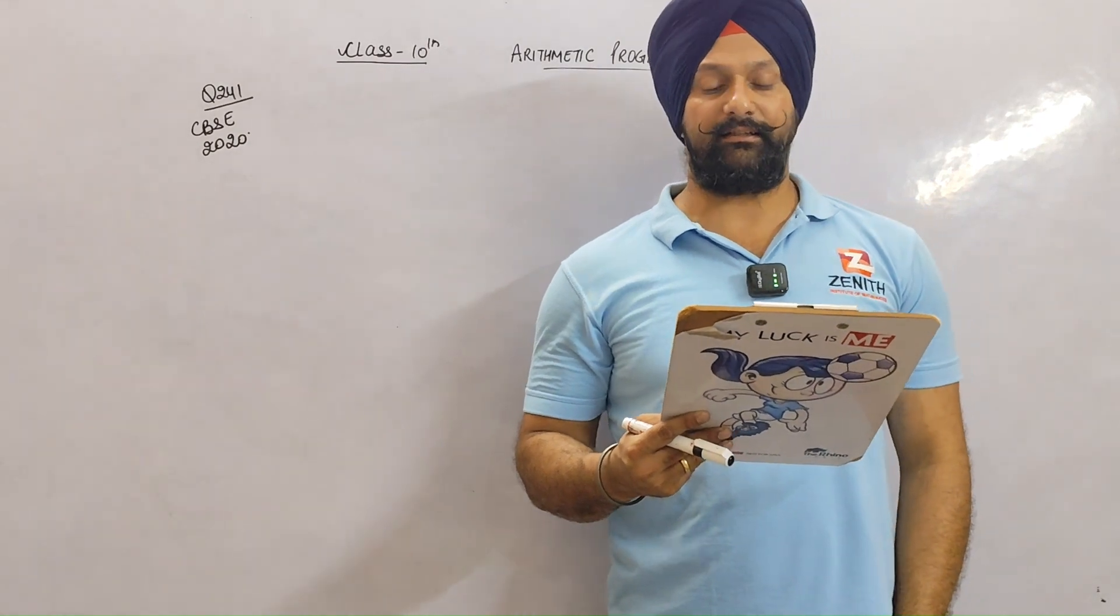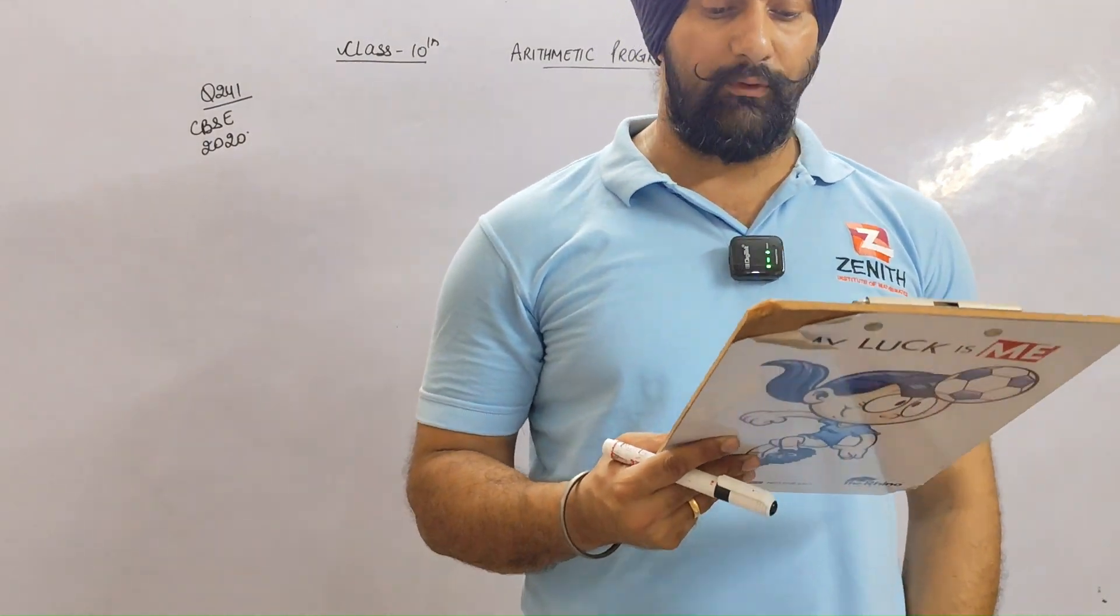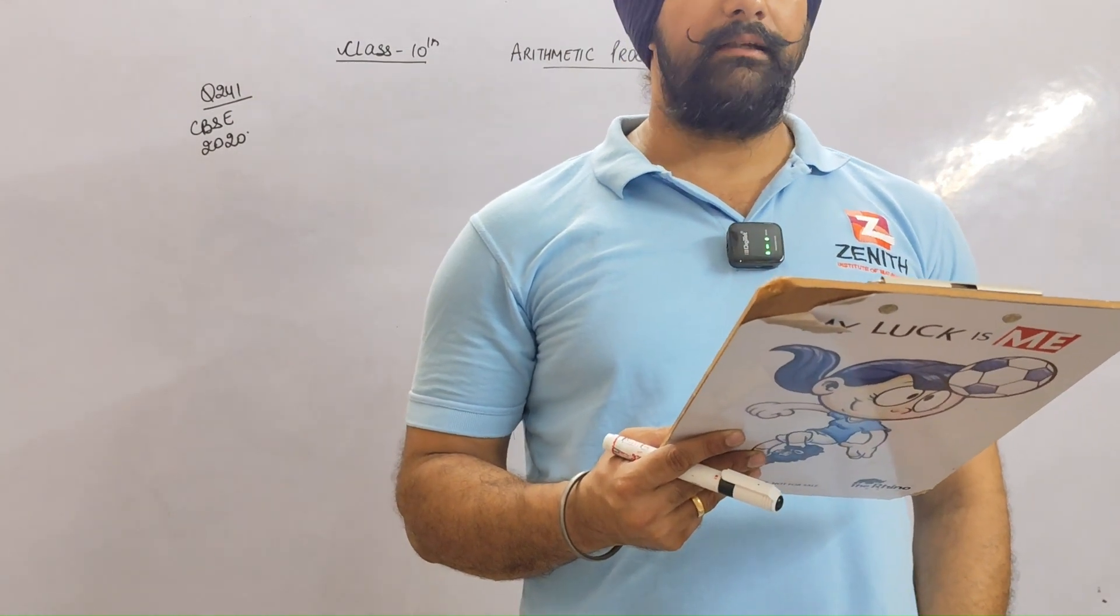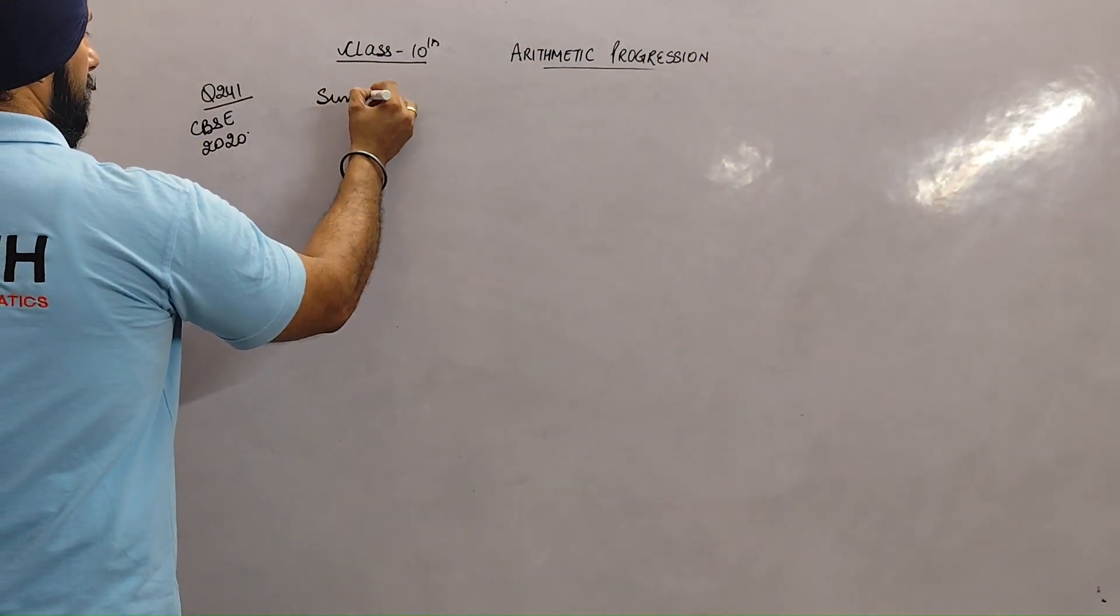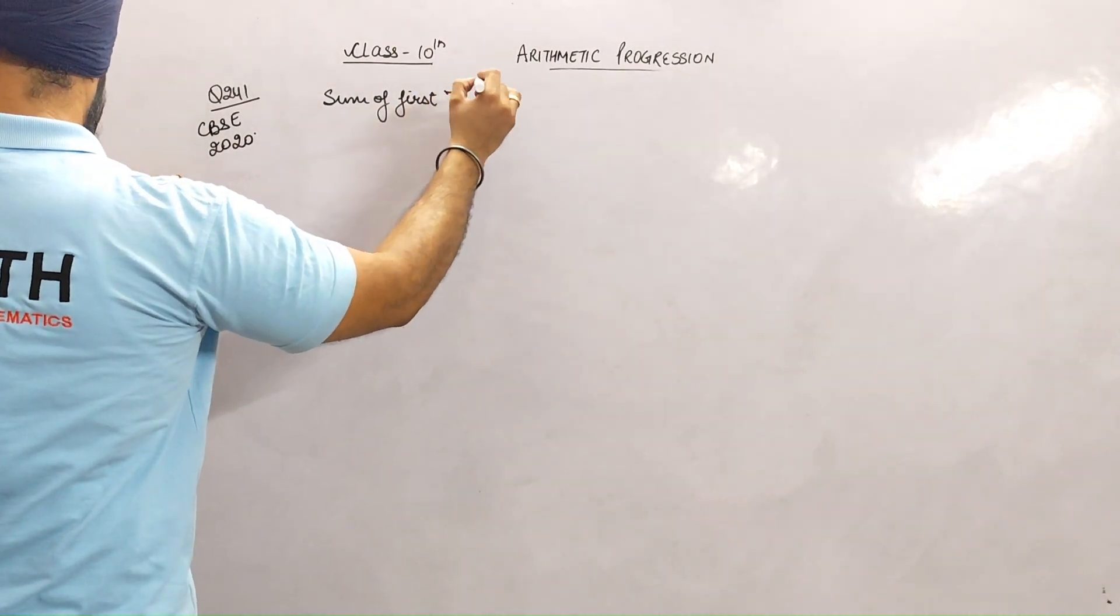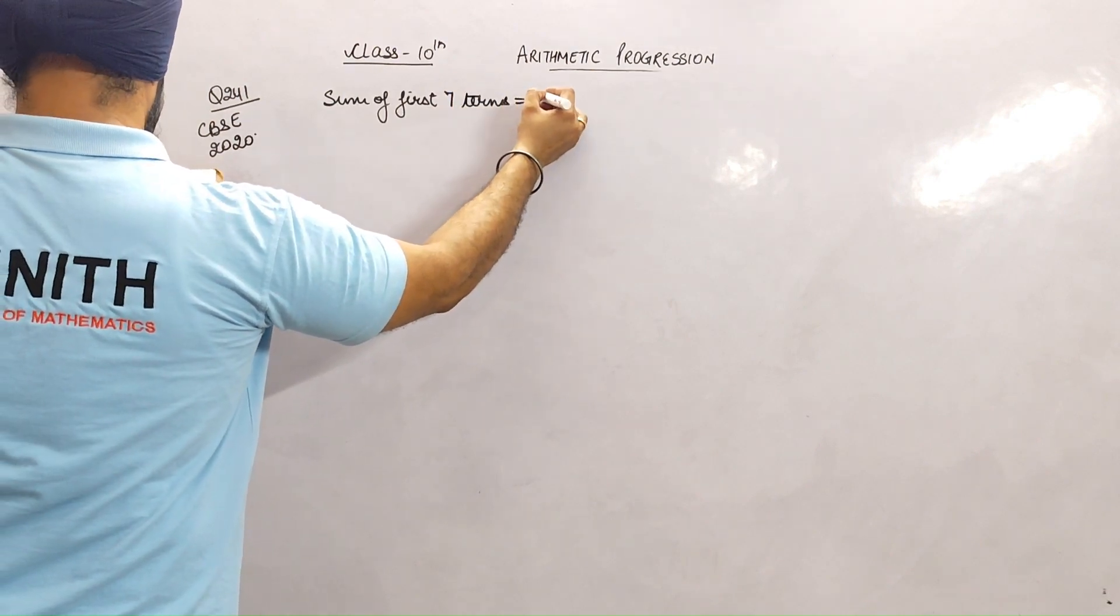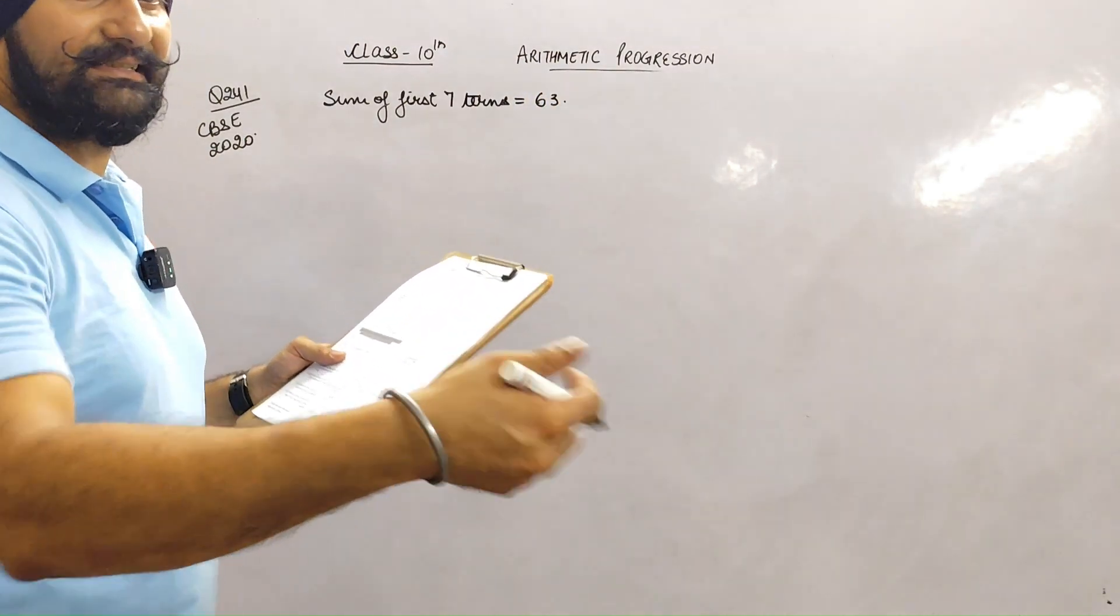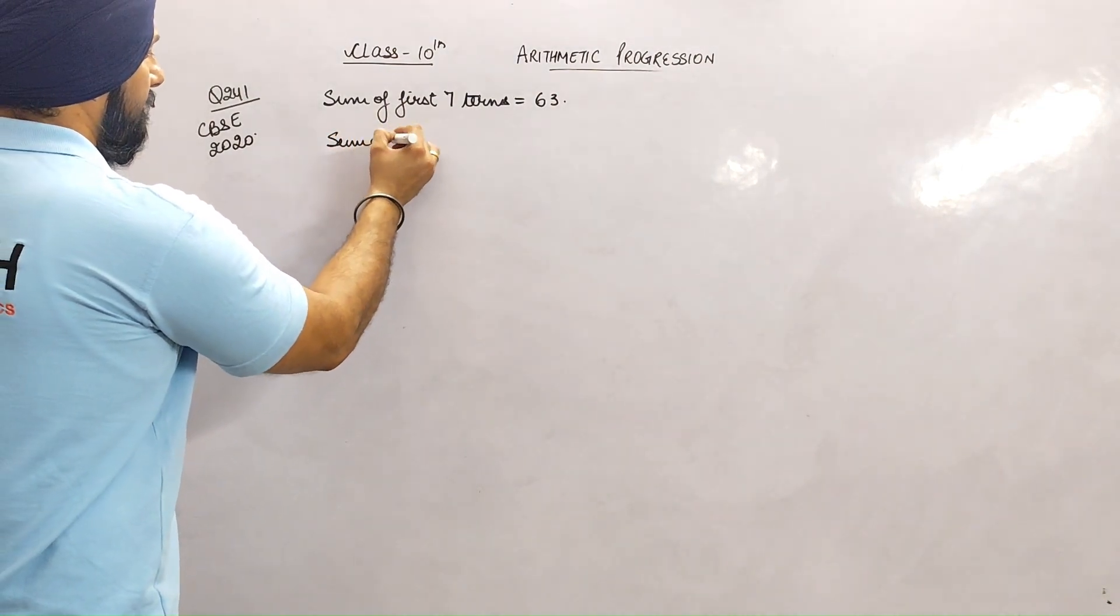Yes students, next question. Question number 241 from CBSE 2020. The sum of first seven terms of the AP is 63, and the sum of its next seven terms is 161.